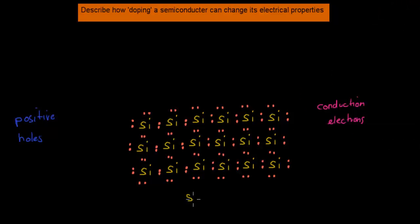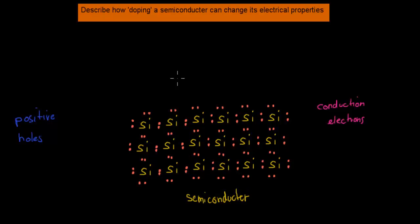I want to start this video by talking about how a semiconductor works, or recapping how a semiconductor works. A semiconductor has two ways of conducting electricity. Either one of its electrons in the valence shell will gain enough energy and move from the valence shell into the conduction shell and thereby become a conduction electron.